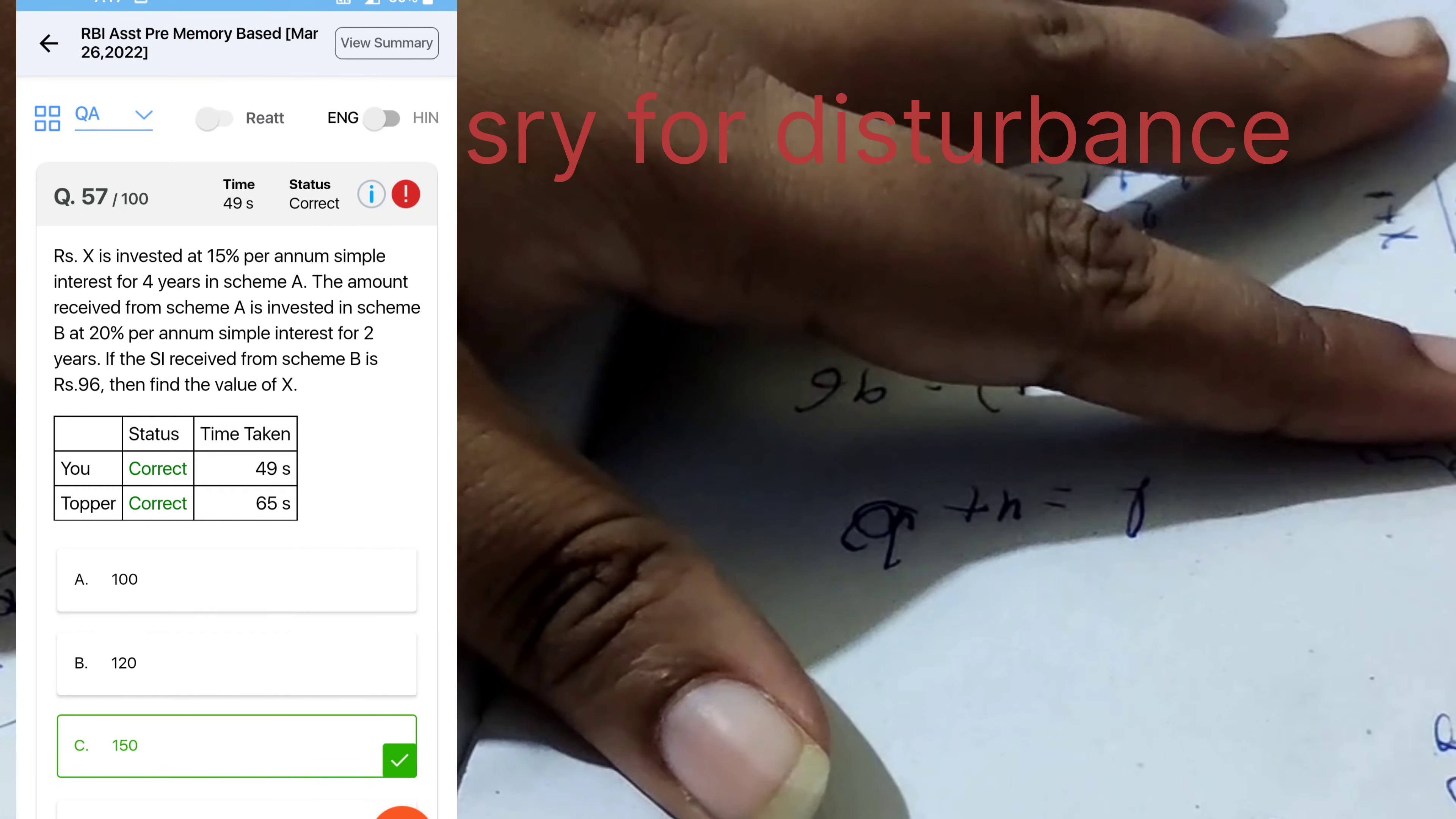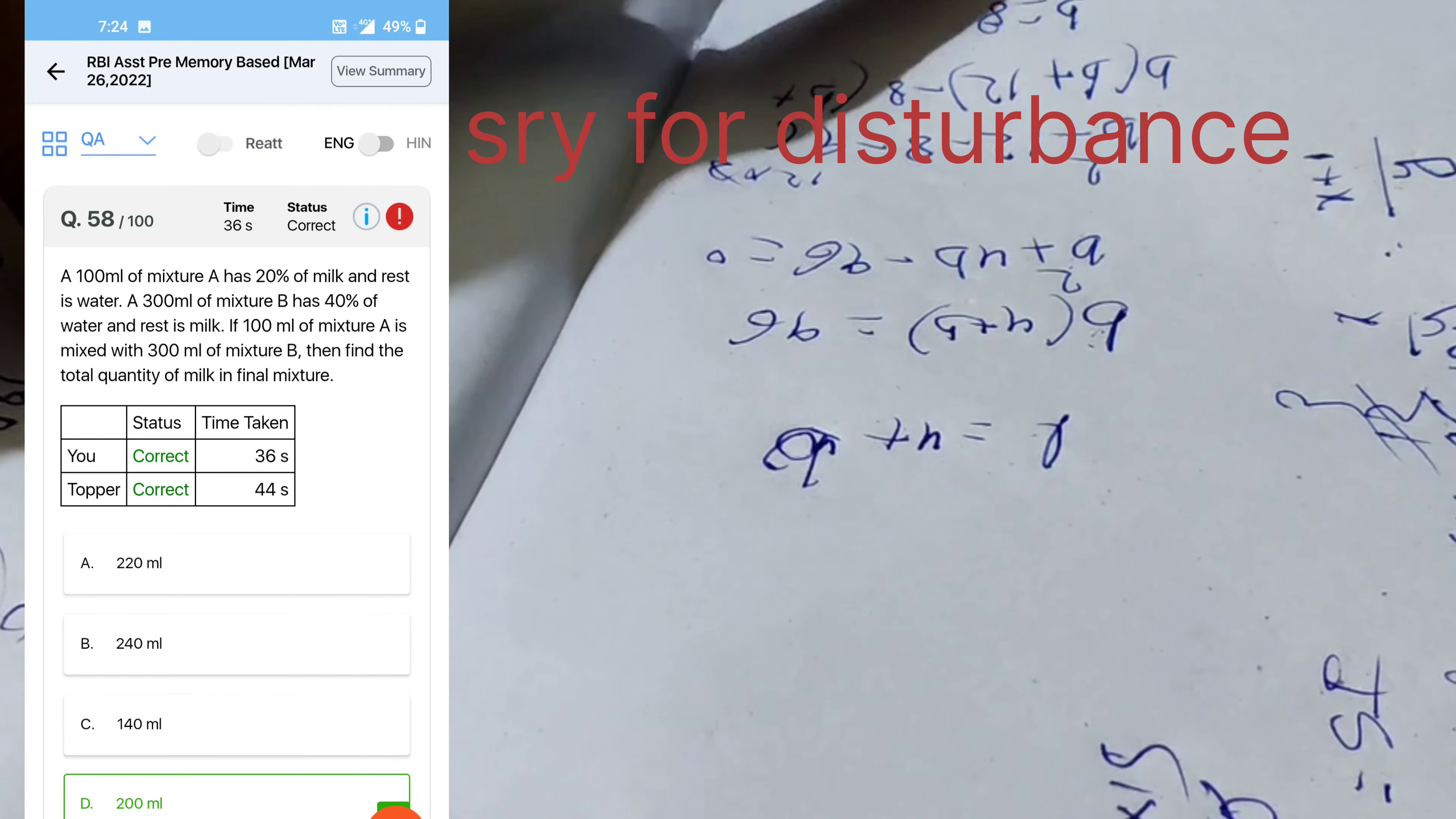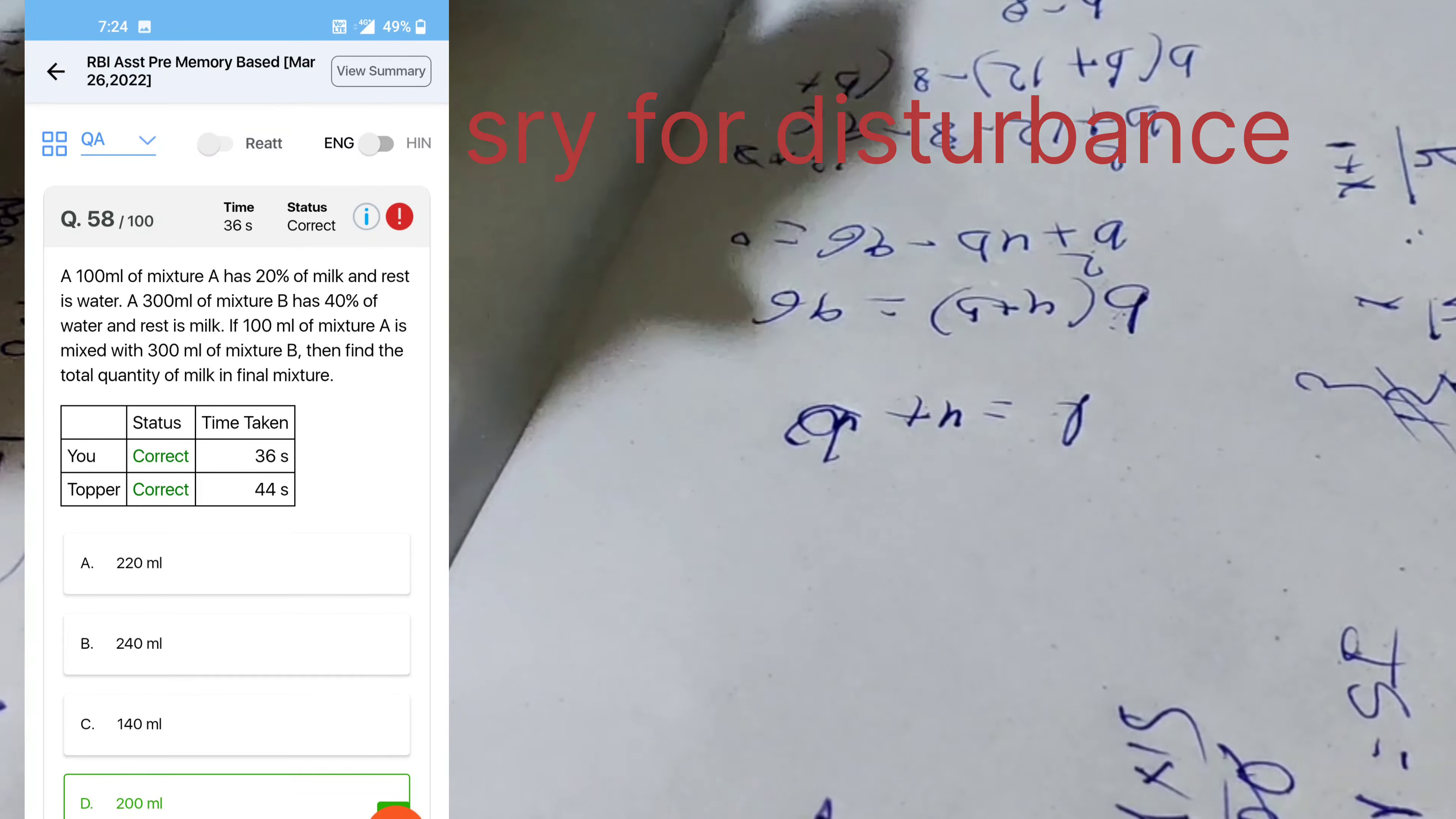Next question, 100 milliliters of mixture A has milk and rest of water, 20 and 80. And 300 liters of mixture B, it's milk and water, 40 percent of water is 120, and again milk 180. If 100 liters of mixture A is mixed with 300 liters, find the quality of milk in the final mixture. 180 plus 20, it's 200.